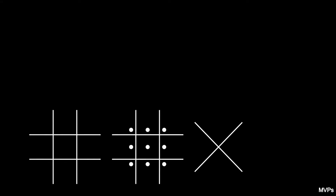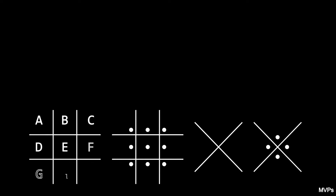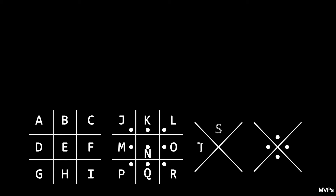To use the Pigpen cipher, you need to remember two shapes: a tic-tac-toe board (or a hashtag) and an X symbol. Then, create two copies of each shape, but in the second copy, fill dots in the openings of the second tic-tac-toe board and second X. Now, fill in the alphabet left to right and top to bottom. The resulting shapes with the filled-in alphabet form the key for the Pigpen cipher, and this should be kept secret.